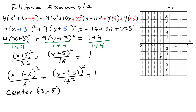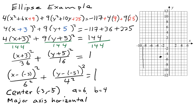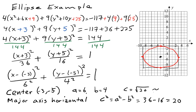A, the larger of the two numbers squared in the denominators, is 6, and B is 4. The larger number, 6, is under the x term, so the major axis is horizontal. From the center, we go 6 spaces left and right to find the ends of the box, and 4 spaces up and down for the top and bottom. The vertices are at the centers of the sides of the box, and we run the ellipse through those vertices. For the foci: C squared equals A squared minus B squared, which is 36 minus 16, or 20. C is the square root of 20, about 4.5. We go 4.5 spaces left and right of center to place the foci.